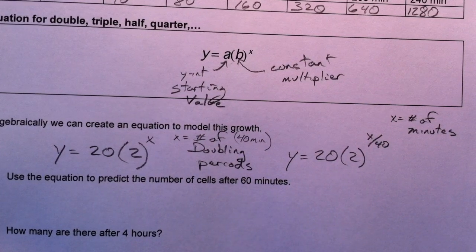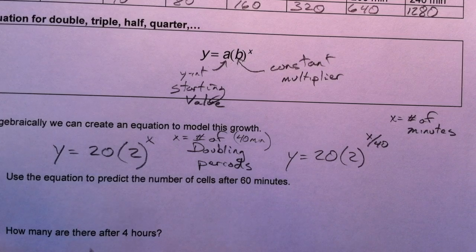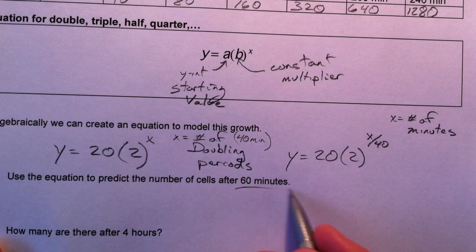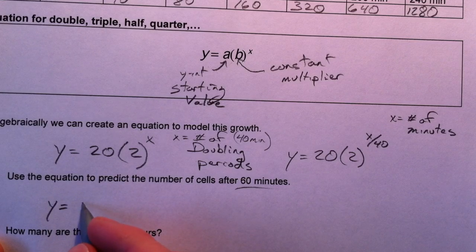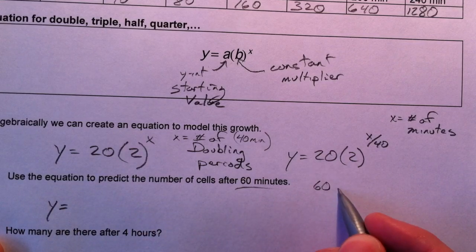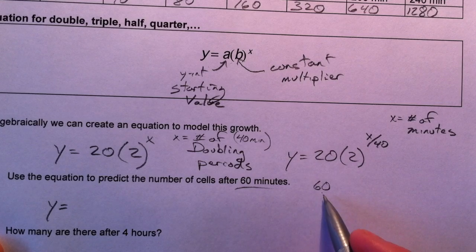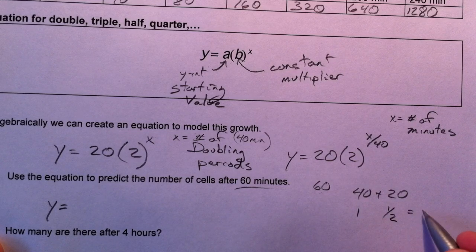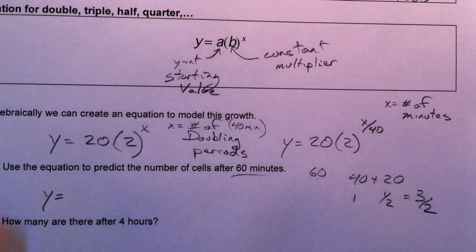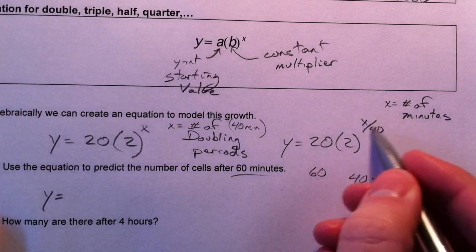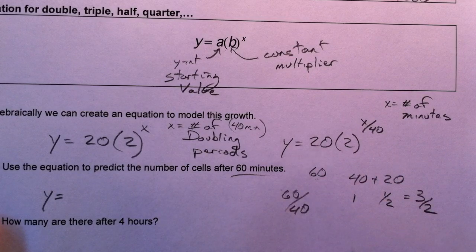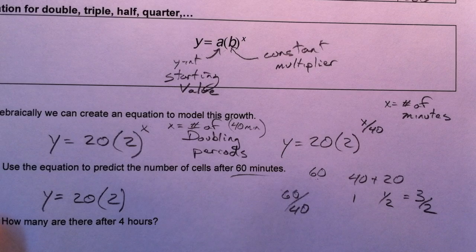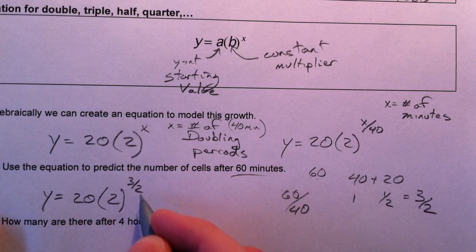Either form will get you to the exact same answer. Let's predict the number of cells after 60 minutes. How many doubling times is that? 60 minutes is 40 plus another 20, so that's 1 and a half — or 3/2 — doubling times. You get the same result using the equation: 60 divided by 40 = 1.5. So we compute 20 · 2^1.5.